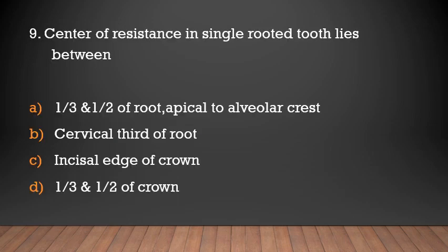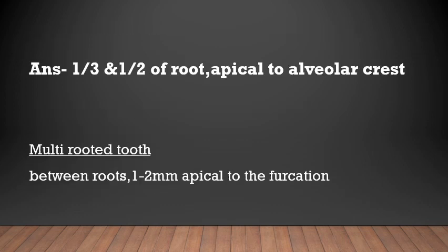The center of resistance in a single-rooted tooth lies between one-third and one-half of the root, apical to the alveolar crest. In the case of a multi-rooted tooth, the center of resistance lies between the roots, 1 to 2mm apical to the furcation.